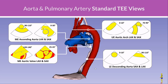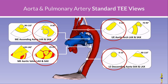Here are the basic TEE views for assessing the aorta and PA — four sets of long and short axis pairs. We have the mid-esophageal long and short axis views of the aortic valve, the mid-esophageal ascending aorta long and short axis views (which also show the PA), the upper esophageal arch views, and views of the descending aorta from upper to lower esophagus. You can get most information with just four views by keeping the probe near zero degrees and scanning through the entire aorta — a screening exam can be done in under a minute.